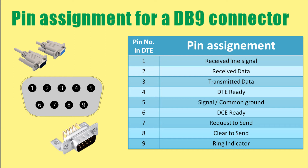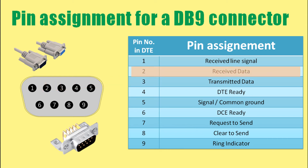This is the pin assignment chart for a DB9 connector. The Transmitted Data pin carries serial data from the DTE to the corresponding pin on the DCE; the line is held at a negative voltage during idle periods. The Received Data pin carries serial data from the DCE to the corresponding pin on the DTE. RTS is the Request to Send hardware control line; this line is placed active at positive voltage when the DTE requests permission to send data.